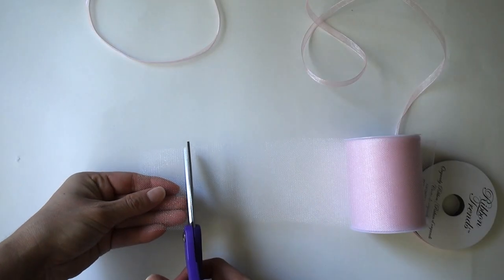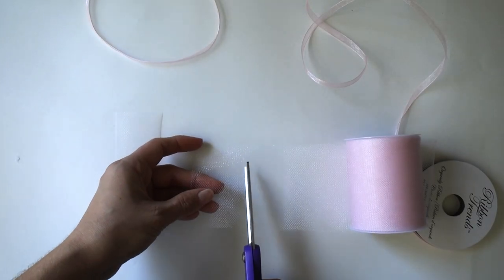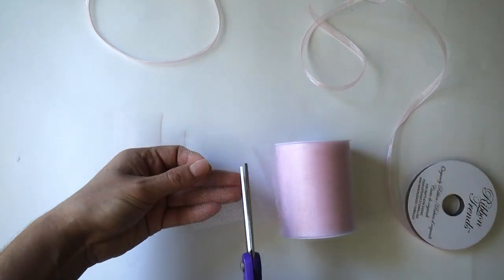Now, take the tulle ribbon and cut it into rectangular strips. I cut about 15 pieces here.